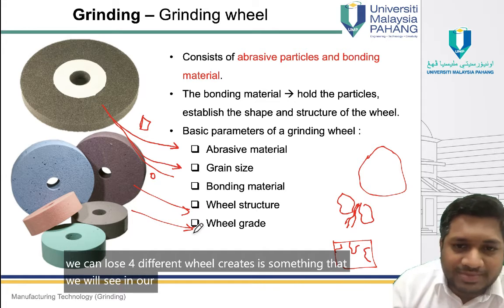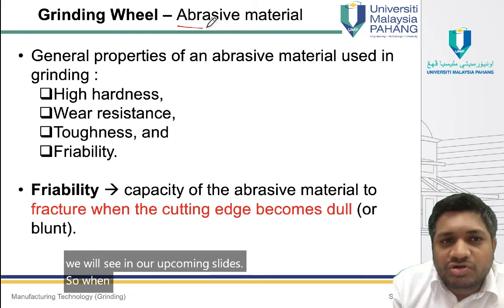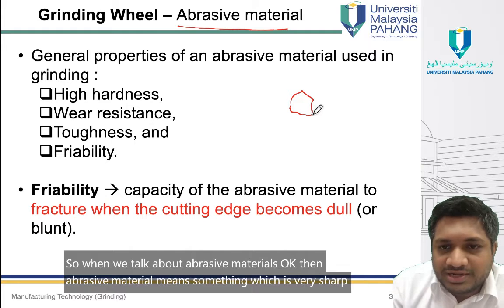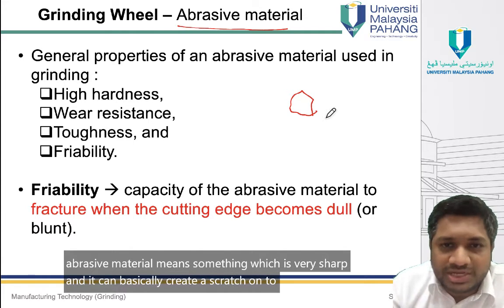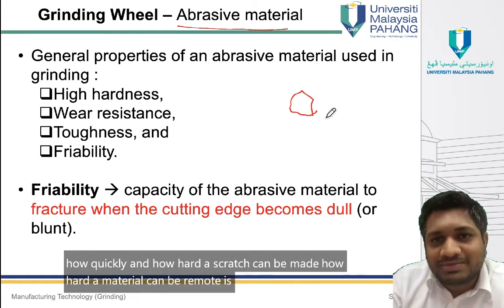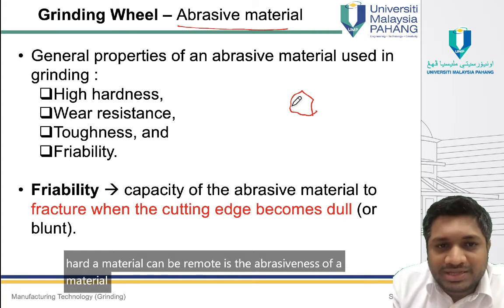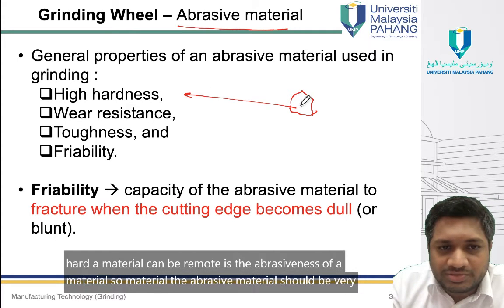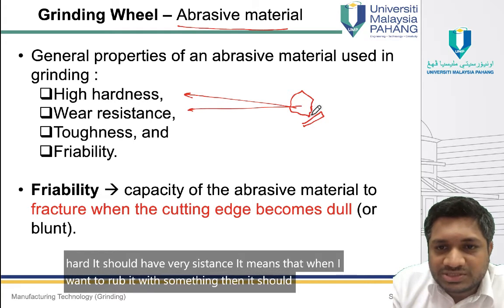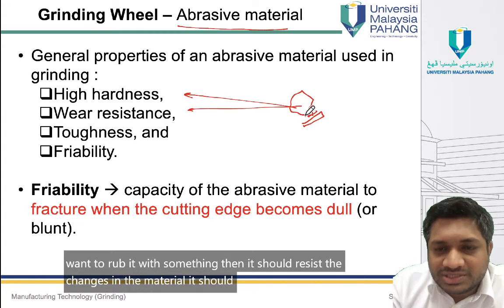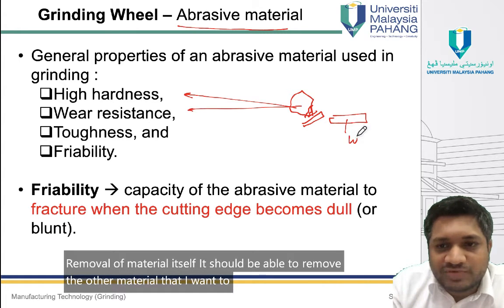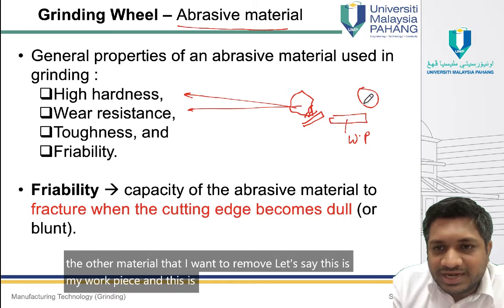Abrasive material is something very sharp that can create a scratch on a surface. The abrasive material should be very hard and should have wear resistance — when rubbed against something, it should resist its own material removal while removing the workpiece material. The grinding wheel should remove the workpiece but not itself get worn out, which is why good wear resistance is essential.